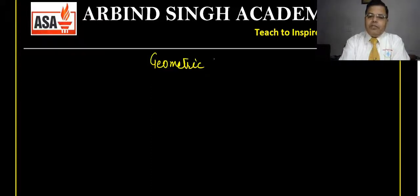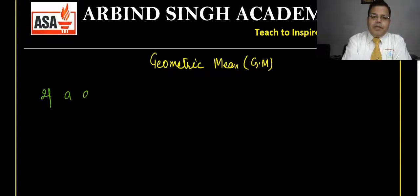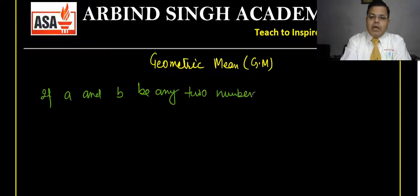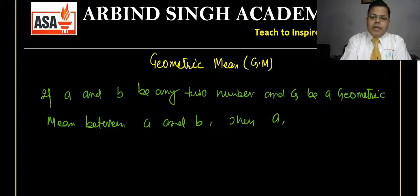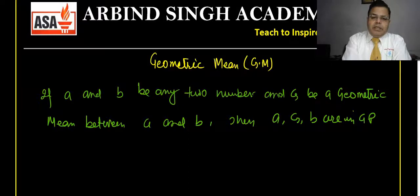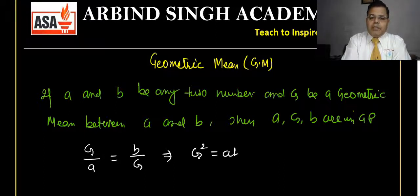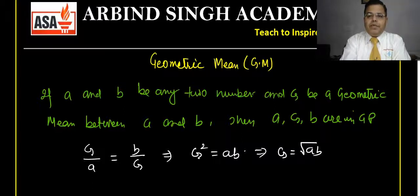Geometric mean, similar to what we did in arithmetic mean, is also called GM. If a and B are any two numbers and G is the geometric mean between them, then a, G, B are in GP. That means the second term divided by the first term equals the third term divided by the second term. This implies G squared equals a·b, and hence G equals the square root of ab.